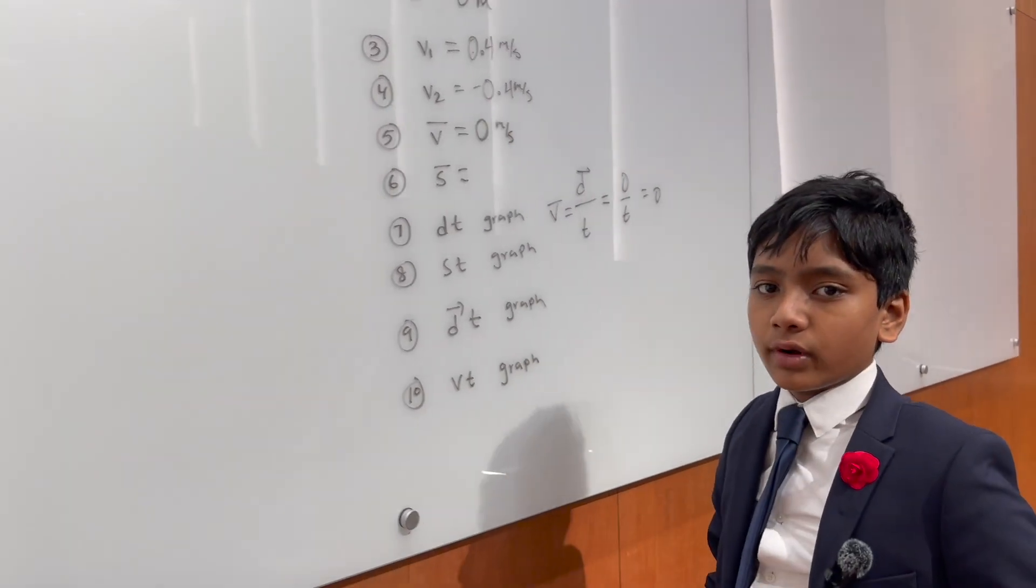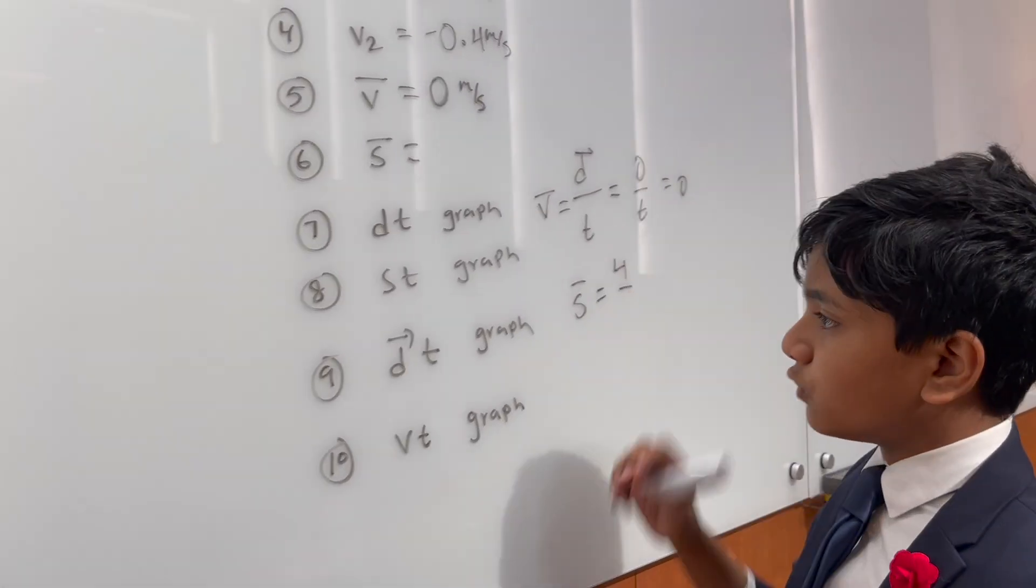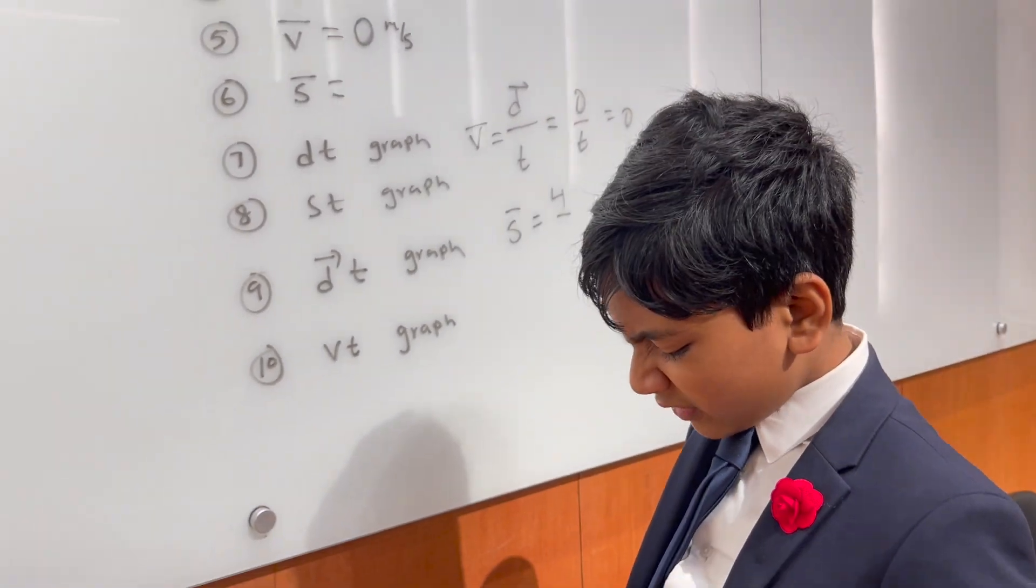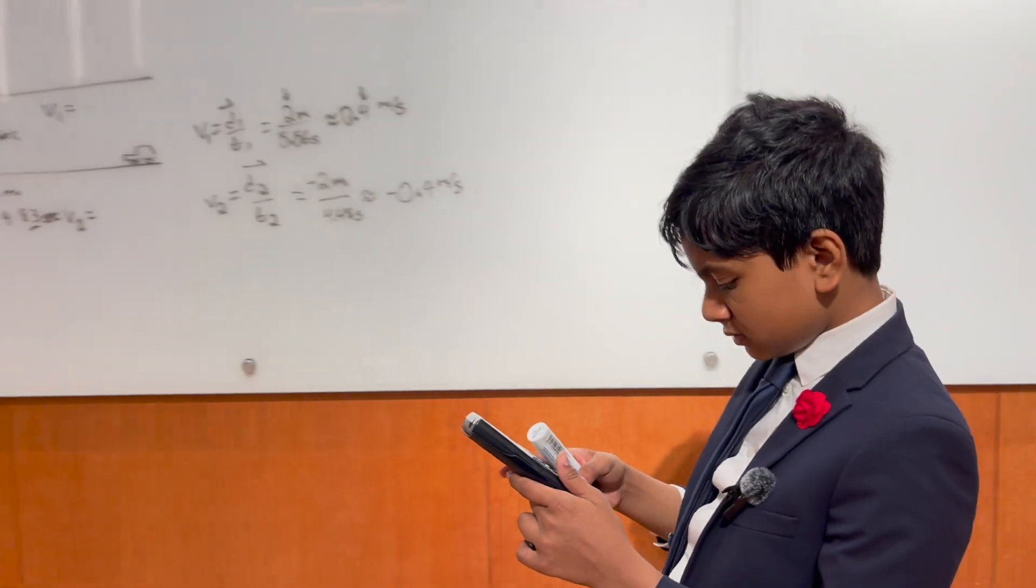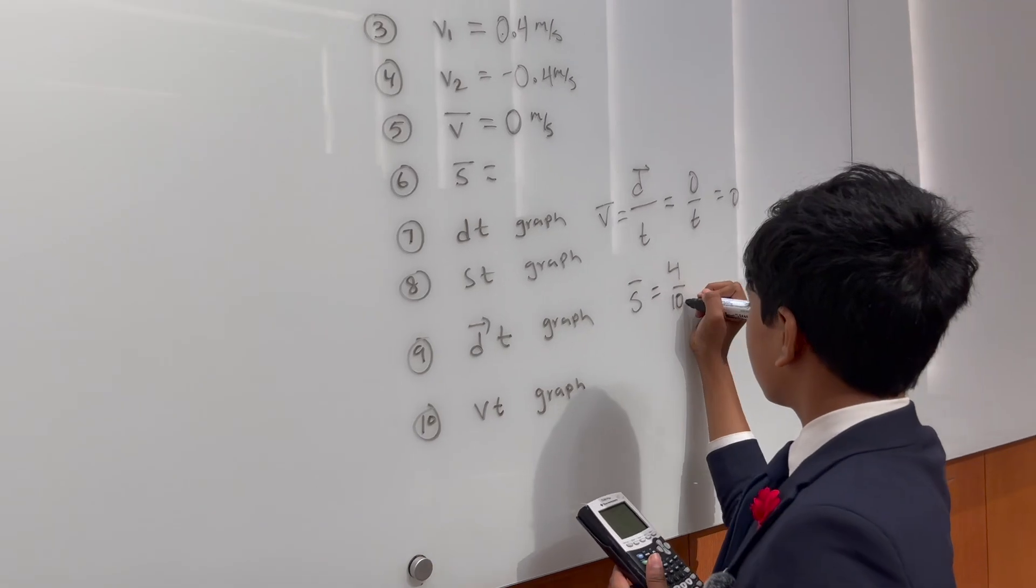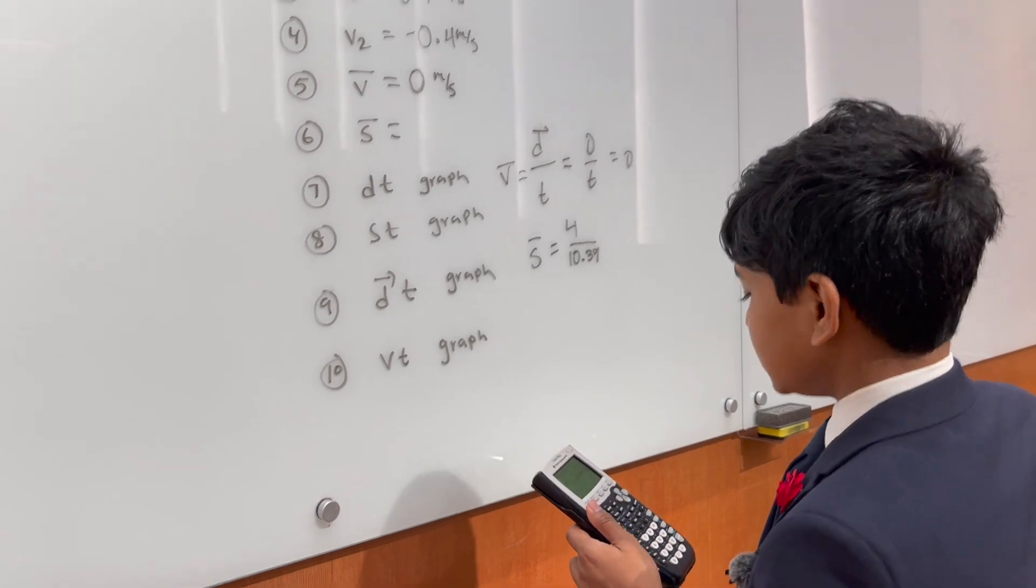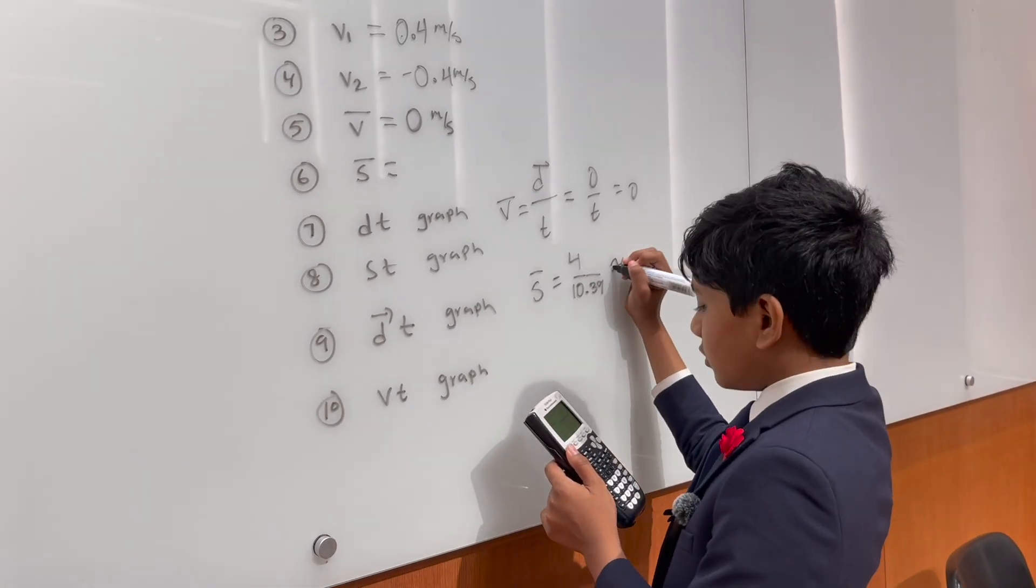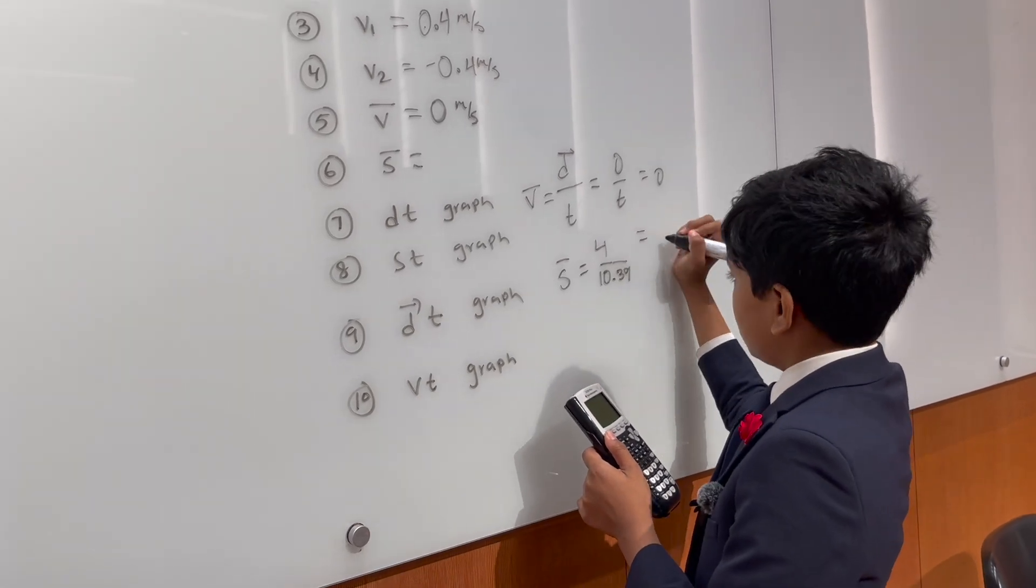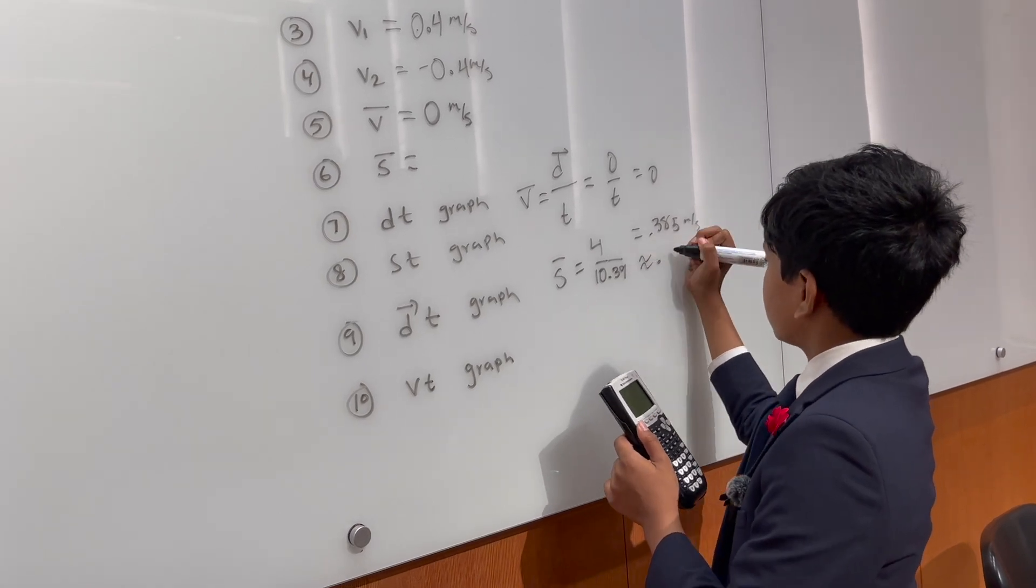And, speed, however, is a little more informational because speed takes the total distance traveled, which is 4, over the total time taken, which was 5.56 plus 4.83, which is a total of 10.39. Now, I would do it the normal way, but since we're so insistent on sig figs, this is, once again, .385 meters per second, or, rounded, .4 meters per second.